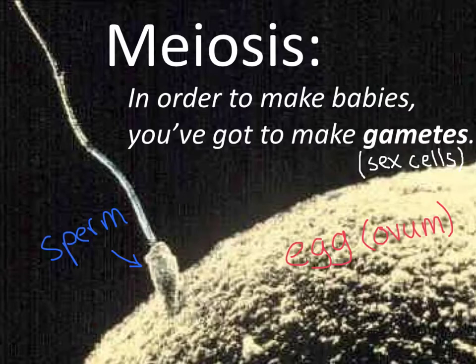But all of this begs a question. How did the sperm and the egg come to be with these special combinations of genes? That requires a particular way of dividing the nucleus of a cell — not mitosis, like we previously learned, but meiosis.